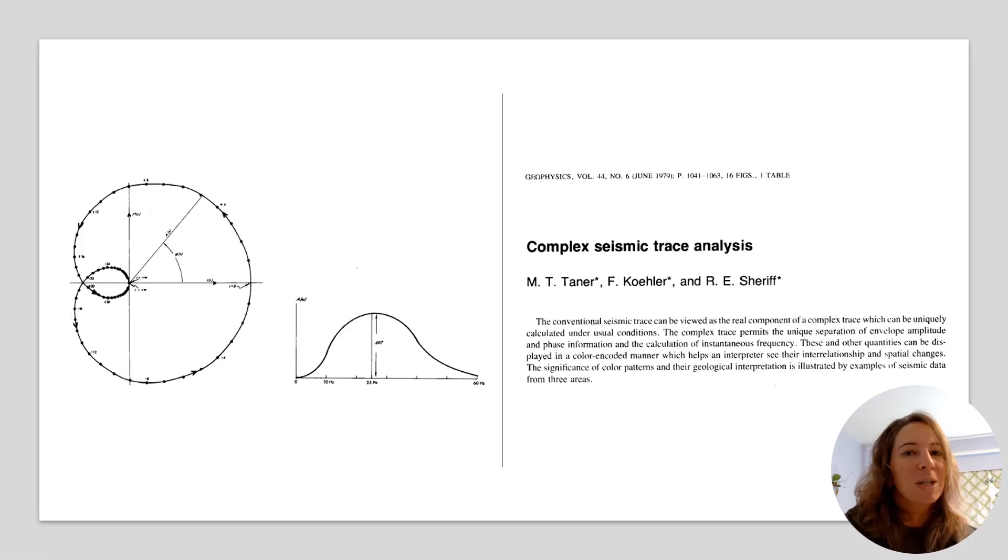I'd be remiss not to mention that Tanner et al. in 1979 established the foundational mathematics for deriving instantaneous attributes from seismic data using this complex trace. They showed how envelope, phase, and frequency could all be extracted from that analytic signal. Their work revolutionized seismic attribute analysis. So let's look at some of those attributes.